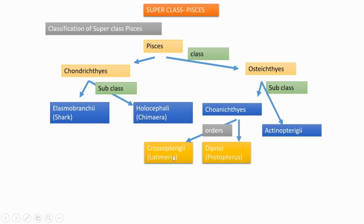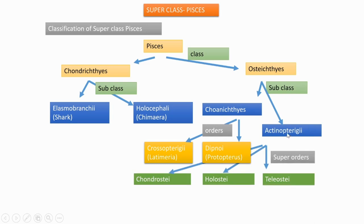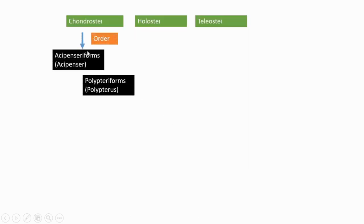Under Choanichthyes, it is again subdivided into two orders: Crossopterygii, for which you will learn Latimeria as the example, and Dipnoi, under which you will learn Protopterus as the example. Coming to Actinopterygii, it is divided into three superorders: Chondrostei, Holostei, and Teleostei.